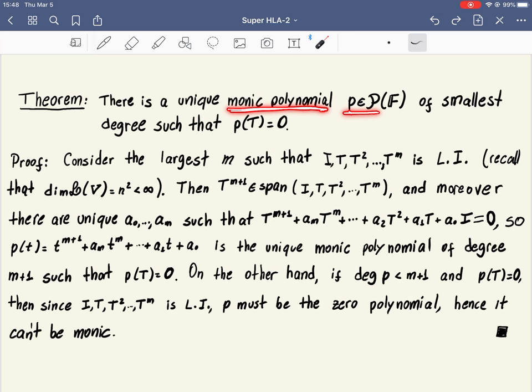There's a monic polynomial such that P of the operator is the 0 operator. It has the smallest possible degree and it's unique. Unique in the sense that if there's another one which also has the smallest possible degree, it has to be the same.